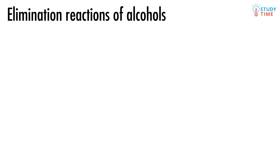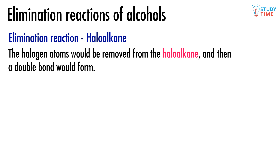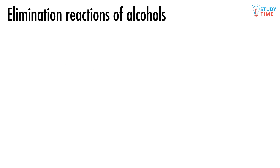You'll have seen elimination reactions before when we looked at haloalkanes. In those elimination reactions, the halogen atom — Cl or Br — would be removed from the haloalkane, a double bond would form, and a hydrogen atom would be lost as well. Now we're going to look at how elimination reactions work with alcohols.